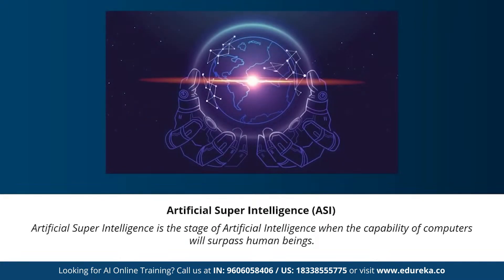Artificial super intelligence is the stage where the capability of computers will surpass human beings. It is currently seen as a hypothetical situation, as depicted in movies and science fiction. Machines taking over the world — that's artificial super intelligence. Such systems don't currently exist; we have no machine capable of reasoning better than a human being.